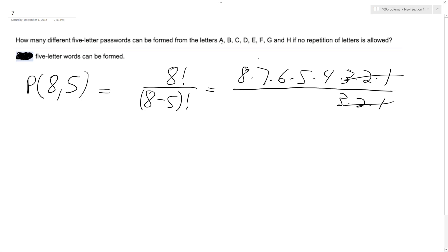And then when you multiply these together, eight, seven, six, five, four, what you end up with is six thousand seven hundred and twenty permutations, or combinations that can be formed.